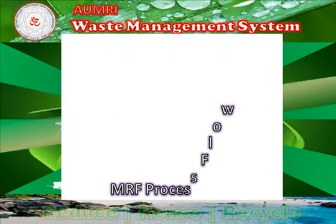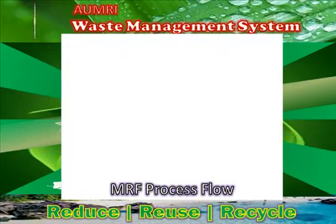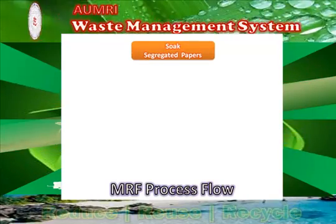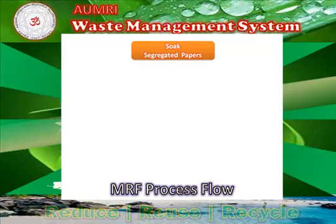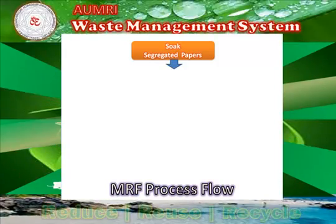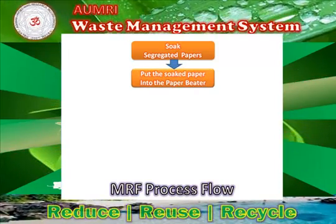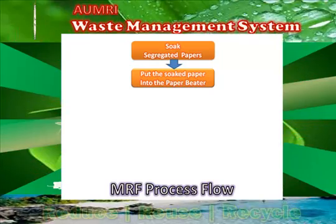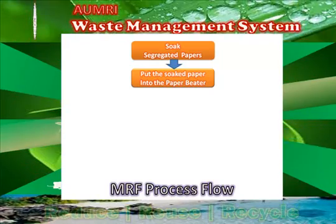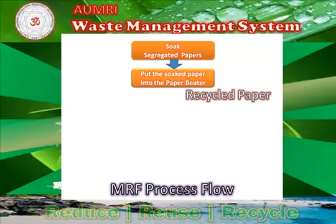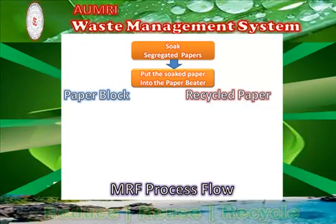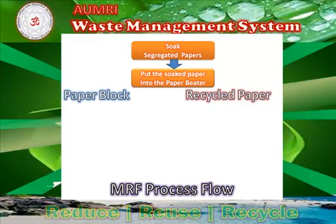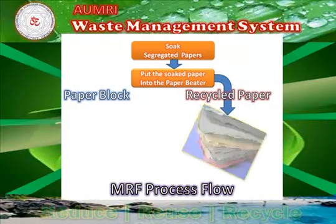The material recovery facility process flow is as follows. The collected waste paper is soaked in water to soften the fiber before it will be beaten to recover the paper pulp. The soaked paper is fed to the fiber beater to obtain the pulp. The pulp can be used as a component in recycled paper, or as a component in making the paper blocks. If you are going to use the pulp for paper recycling, you need to do the following.